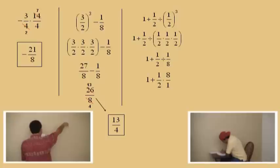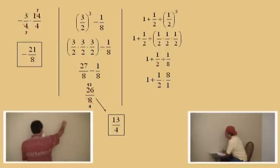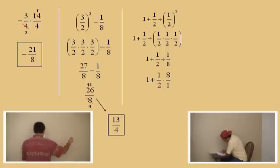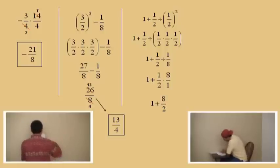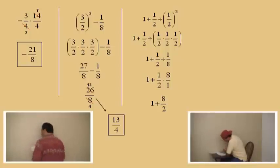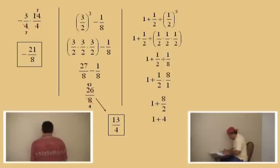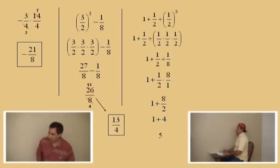And take the reciprocal of 1 over 8. Now we're ready to multiply. We have addition and multiplication, so we've got to do the multiplication first. What's 1 half times 8 over 1? 8 over 2. So 1 plus 8 over 2 gives us 1 plus 4. And our answer is 5. That's right, 5. Very good.